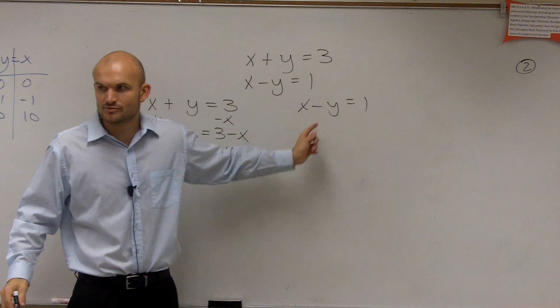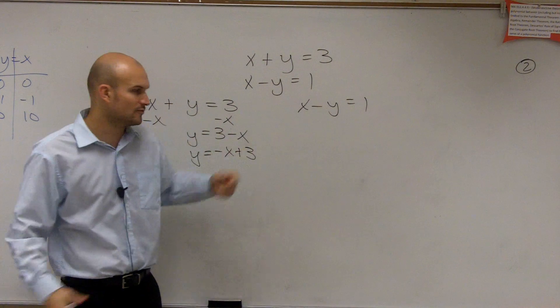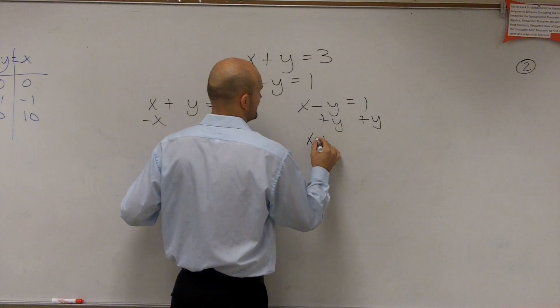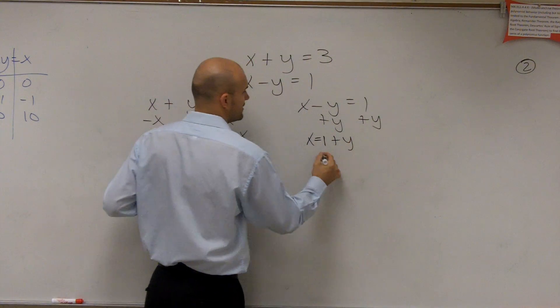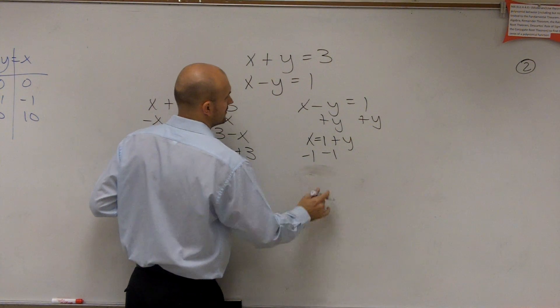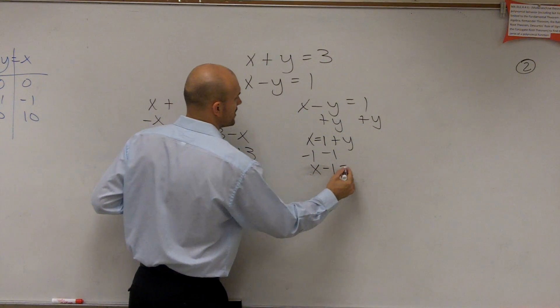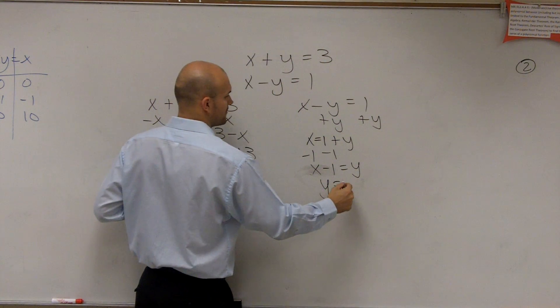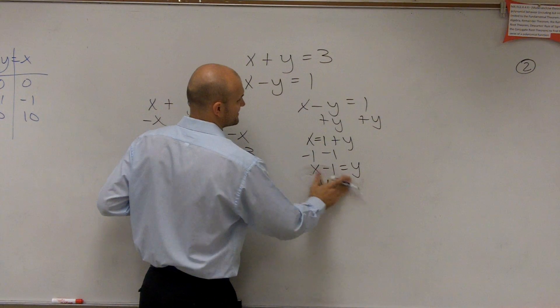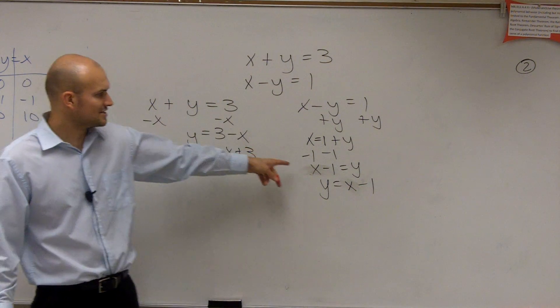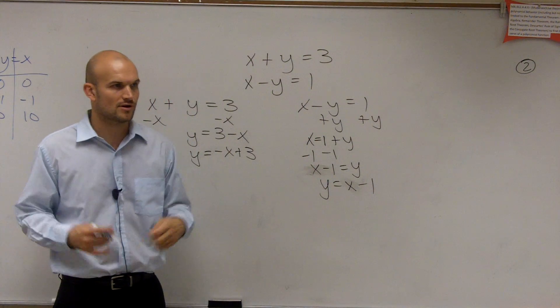Here, I could subtract the x again and divide by negative 1. Instead, I'm actually just going to add the y to the other side. So I have x equals 1 plus y, then subtract the 1. So I have x minus 1 equals y, then let's rewrite it so it's in y equals mx plus b form. So now I just rewrote it, switched it around so it's in those forms.